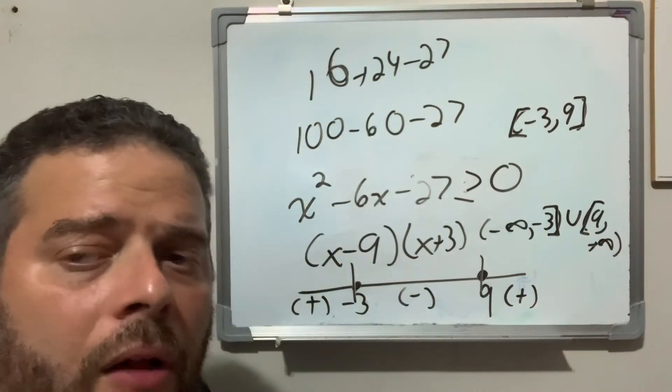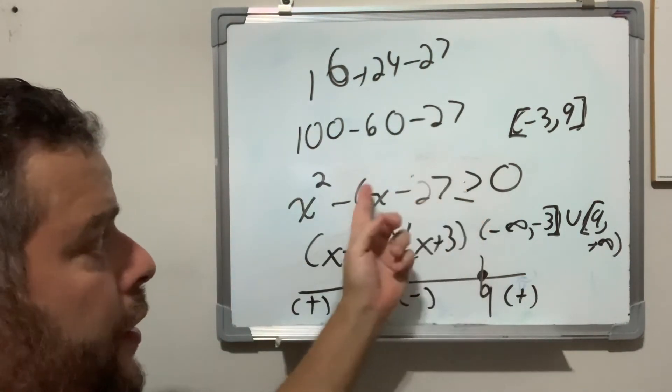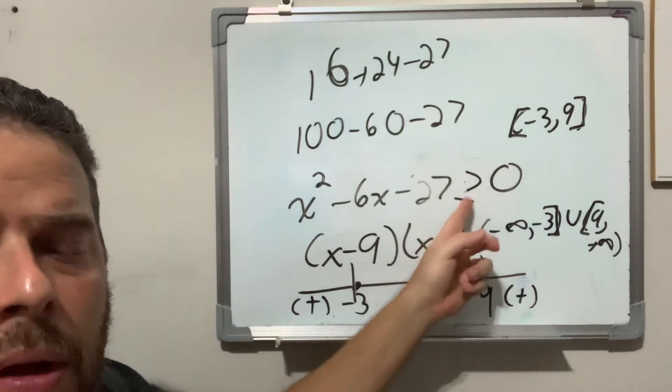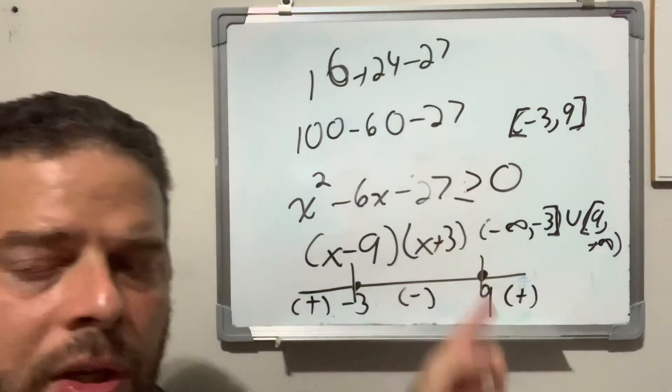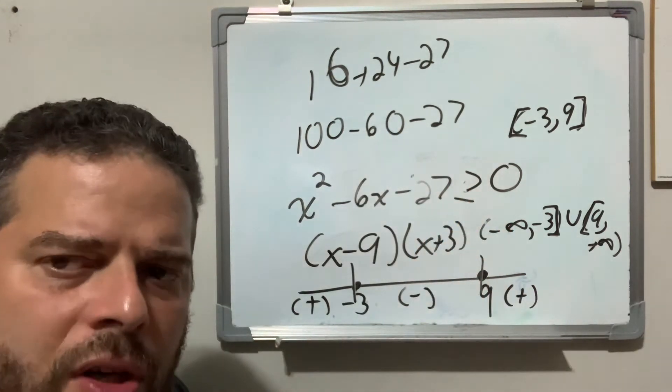Again, giving you all four scenarios: greater than, greater than or equal to zero, less than, less than or equal to zero. Now, that pretty much covers example one.